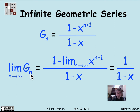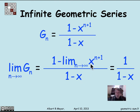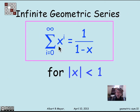The value of this infinite series is the limit of g(n), which is the sum up to n. We have g(n) equals (1 minus x to the n plus 1) over (1 minus x). Taking the limit, the 1 minus x denominator stays fixed, and we get 1 minus the limit as n approaches infinity of x to the n plus 1, divided by 1 minus x. As long as the magnitude of x is less than 1, x to the n plus 1 goes to 0, and we get the simple formula: the sum from i equals 0 to infinity of x to the i equals 1 over (1 minus x), provided the magnitude of x is less than 1.